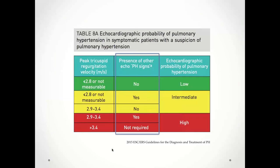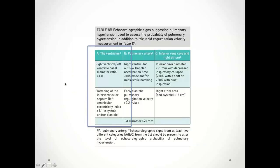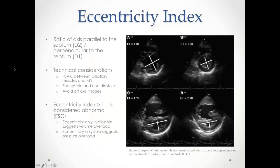Now I'll go through the other echo signs of PH in detail, starting with the ventricles. The eccentricity index is a ratio of D2 (the axis parallel to the septum) over D1 (the axis perpendicular to the septum). D2 divided by D1 gives your eccentricity index.